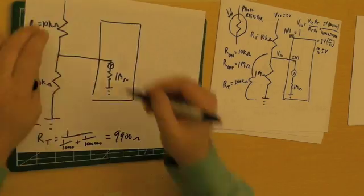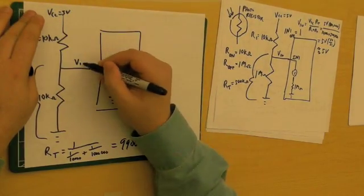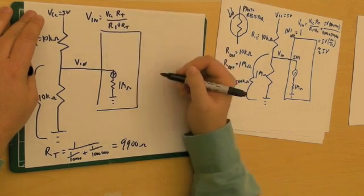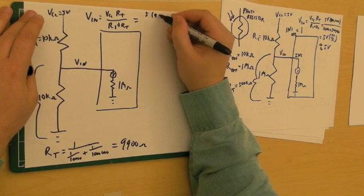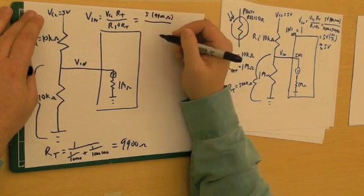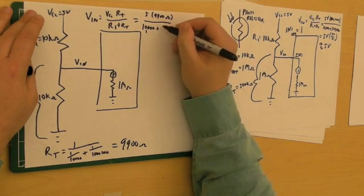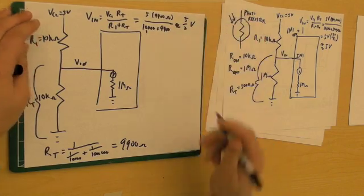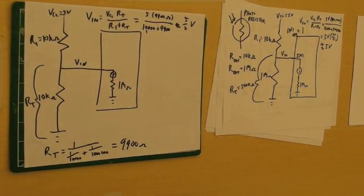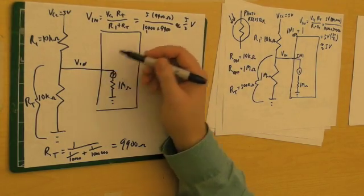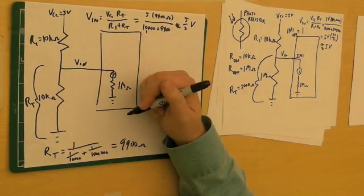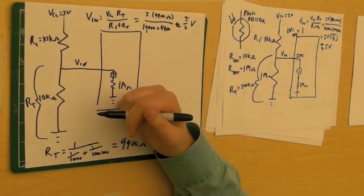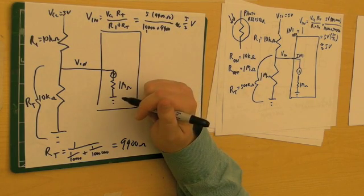Now VIN equals VCC times RT over R1 plus RT. That's 5 times 9,900 over 10,000 plus 9,900 ohms, which equals approximately 2.5 volts. That's a problem because the PIC compares VIN to VCC and ground to see which is closer. At exactly 2.5 volts, what's it going to do? That's too dangerous. How can we fix this?